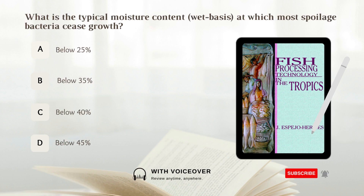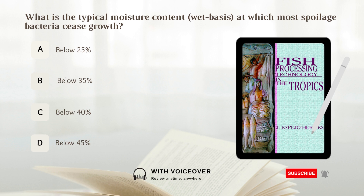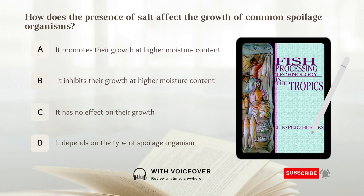What is the typical moisture content, wet basis, at which most spoilage bacteria cease growth? A. Below 25%. B. Below 35%. C. Below 40%. D. Below 45%. Answer: A. Below 25%.